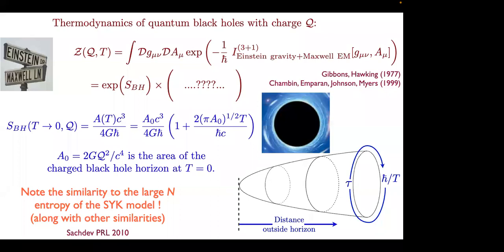If I'm just a pure gravitational theorist, I would like to compute the next correction from the path integral about the saddle point. It turns out that even the next term is universal — it doesn't depend on exactly what's inside the black hole. And it's in fact exactly the same as the term you get for the SYK model.